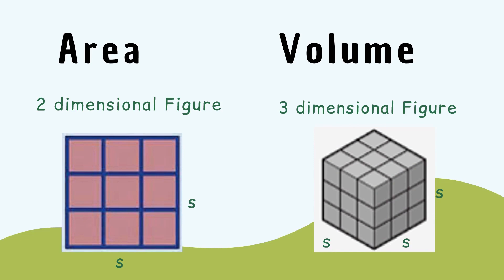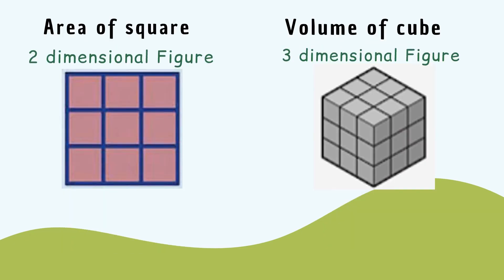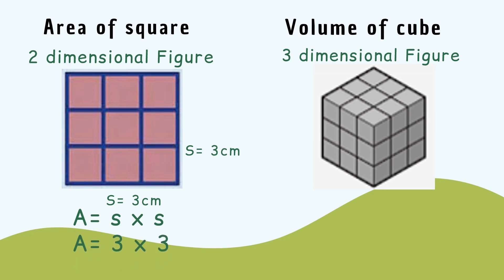In finding the area of a square, we need to find the number of square units. In this figure, the side of a square has a measurement of three centimeters, so we will use the formula s times s. That means three times three, so the answer is nine square centimeters.